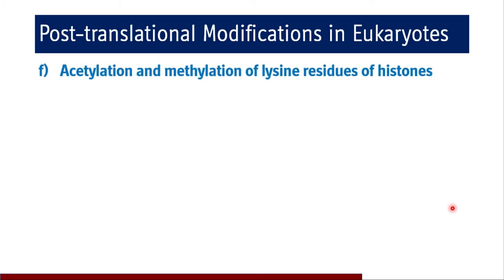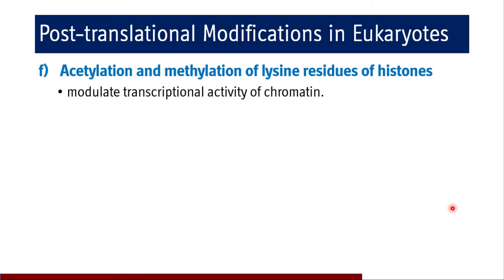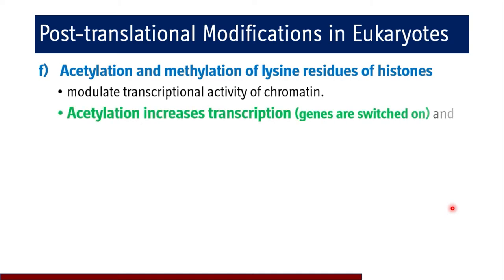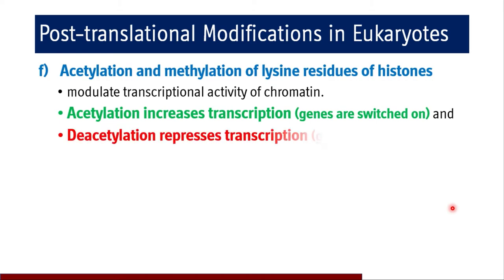Acetylation and methylation of lysine residues of histones is also a reversible type of post-translational modification. They modulate the transcriptional activity of chromatin. Acetylation increases transcription because genes are switched on, while deacetylation represses transcription and genes are switched off. This acetylation and deacetylation of lysine residues of histones, discussed in regulation of transcription, is a reversible post-translational modification.